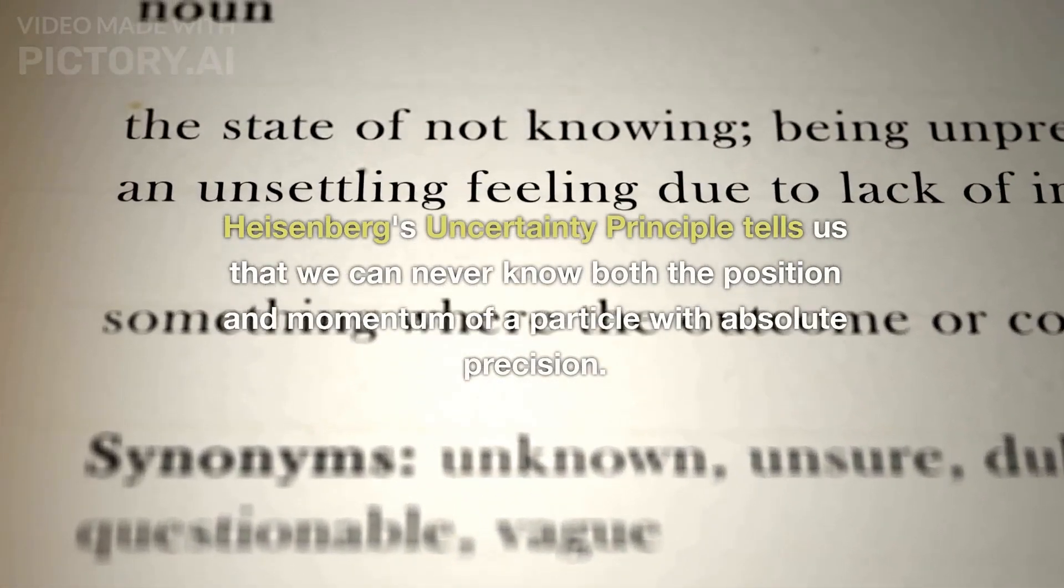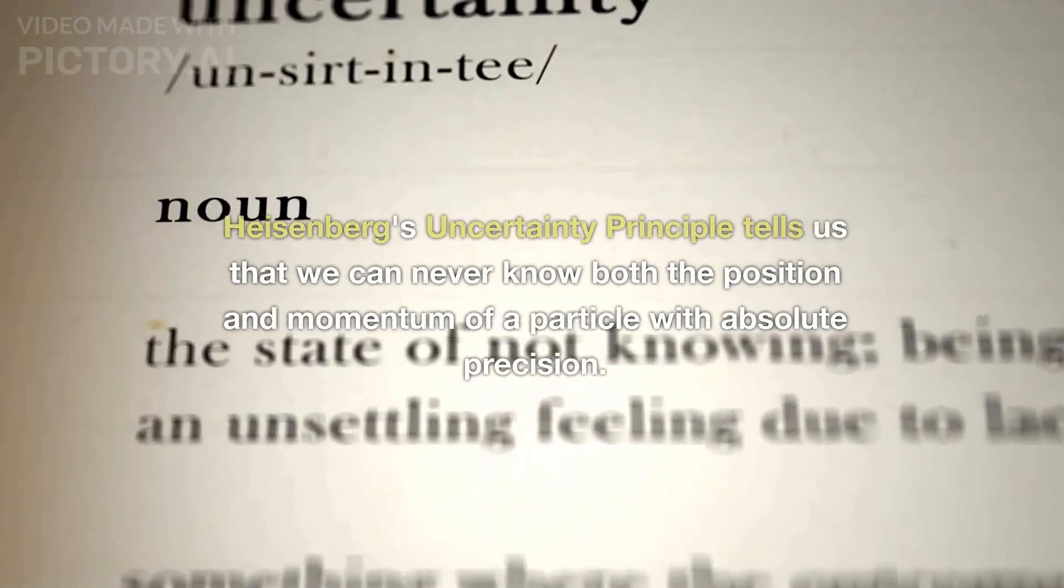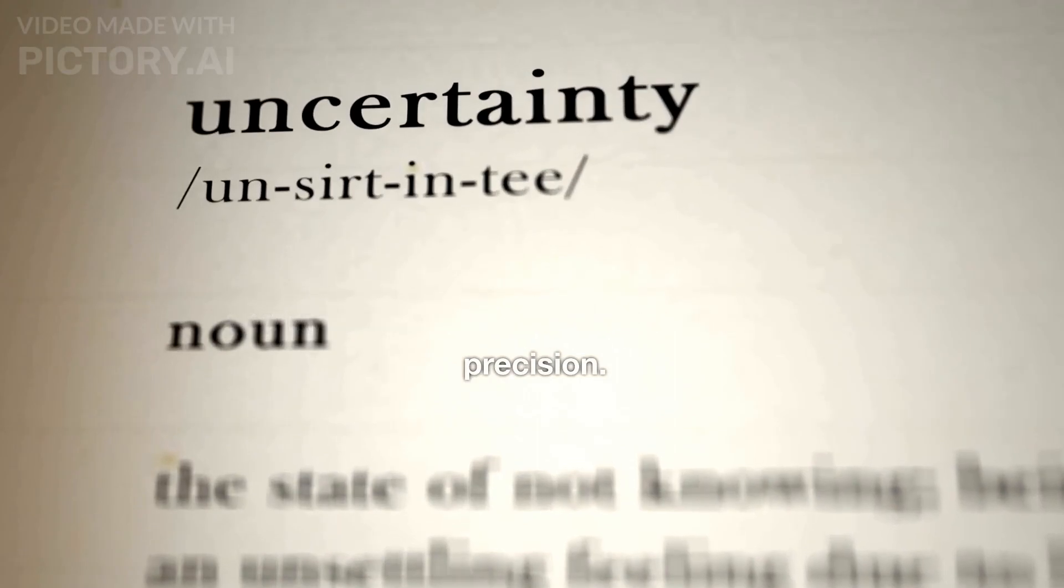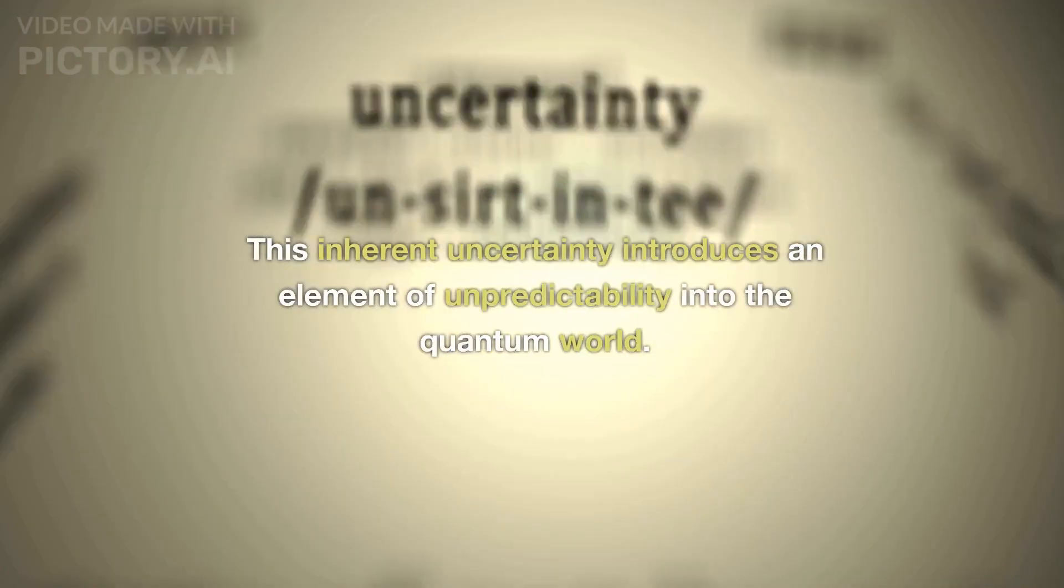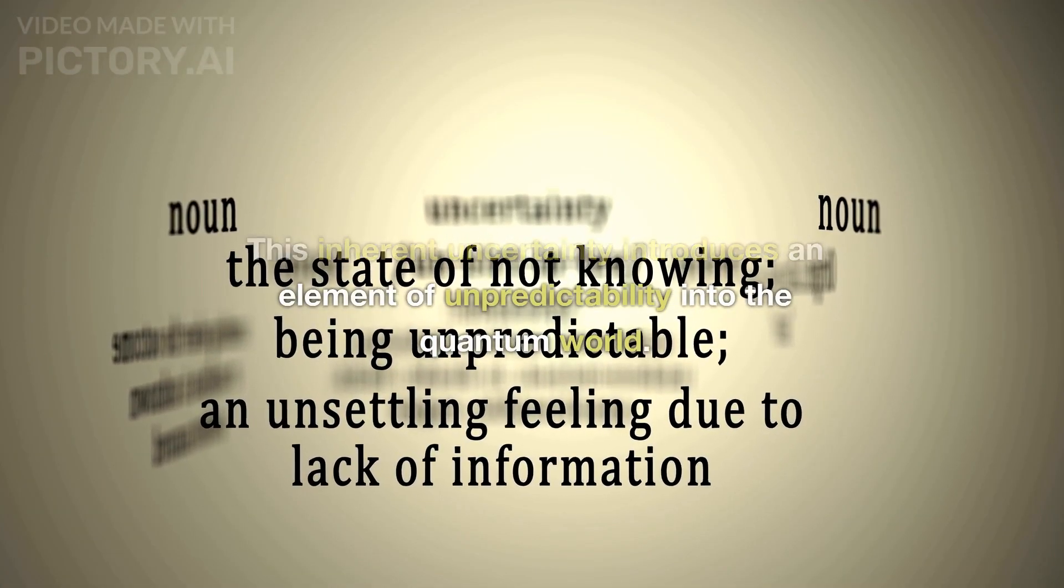Heisenberg's uncertainty principle tells us that we can never know both the position and momentum of a particle with absolute precision. This inherent uncertainty introduces an element of unpredictability into the quantum world.